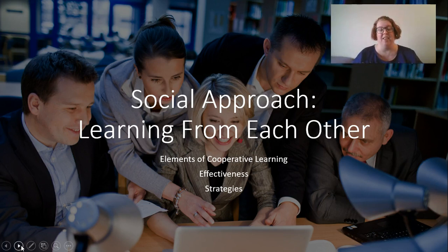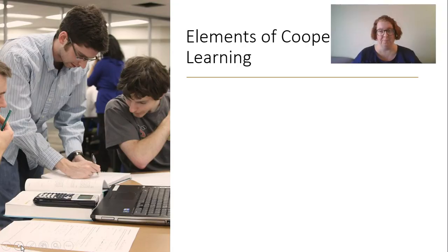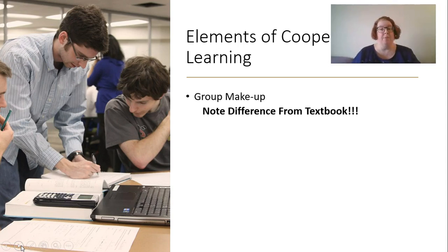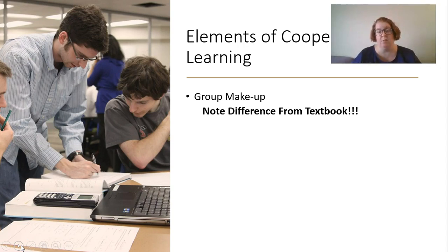Finally, the social approach — learning from each other — and this is one area where I want you to pay attention to what I say and less to what the book says. On group makeup: the book is really big on heterogeneous grouping, but I do not believe that heterogeneous grouping is effective for cooperative learning. The research on cooperative learning actually removed the top 10% and bottom 10% of learners when forming groups. Putting your top learner with your bottom learner just makes the bottom learner dependent on the top learner. I believe homogeneous grouping works best — group similar learners together, and be very careful with group composition.